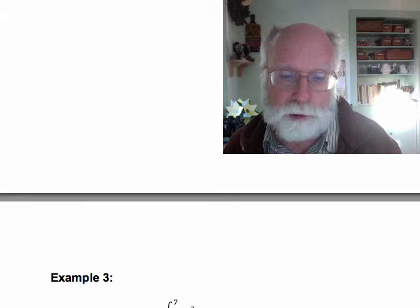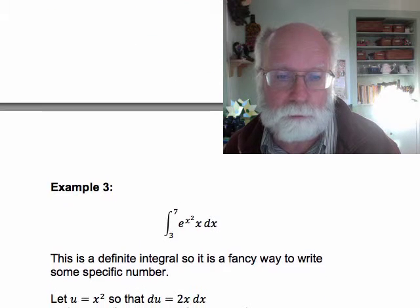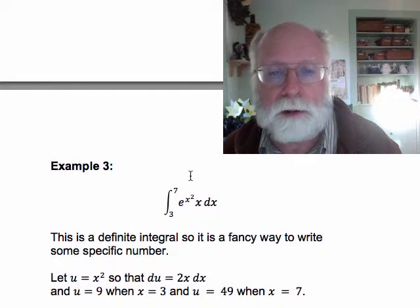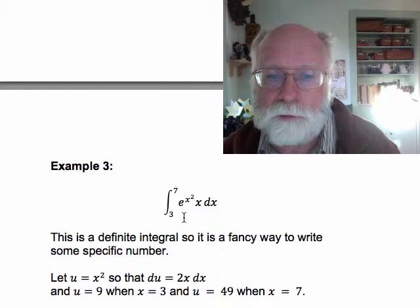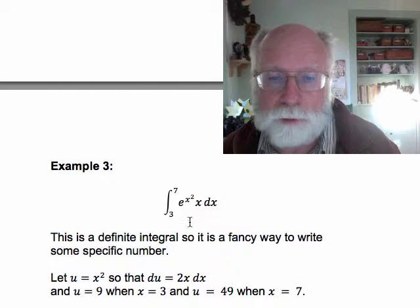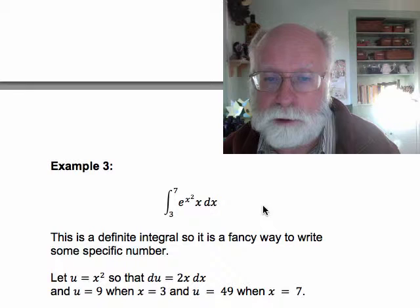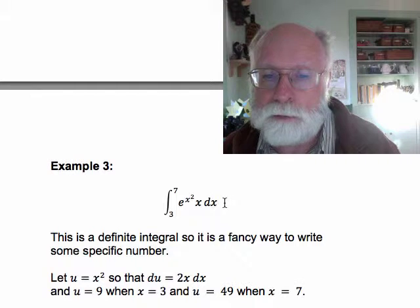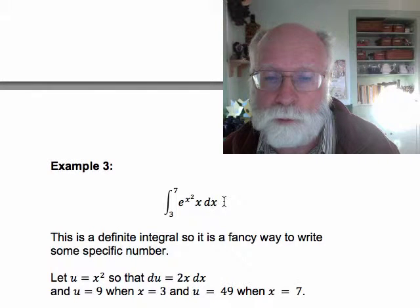Our third example is the integral from 3 to 7 of e to the x squared times x dx. This integral is different because it is a definite integral, and this is just a fancy way to write some specific number. At the end of the problem we have to come back to one specific number.